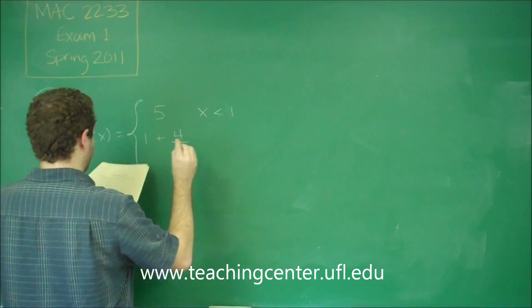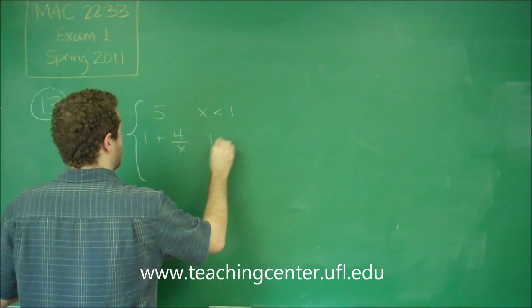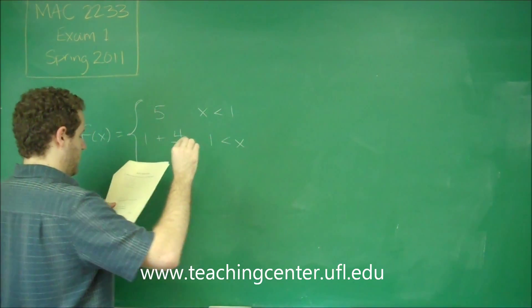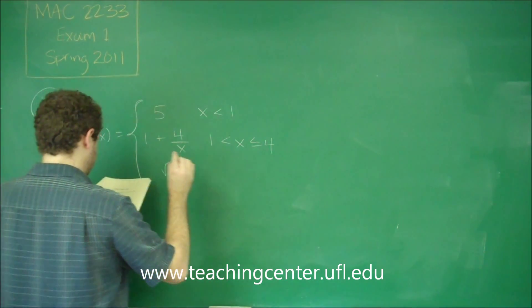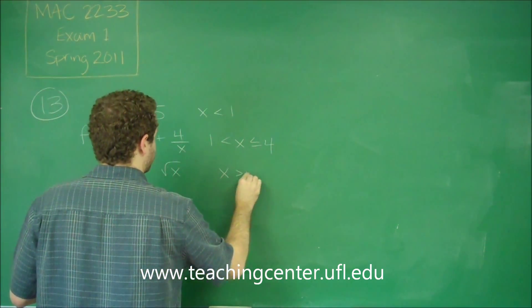We have the function 5 if x is less than 1, 1 plus 4 over x if x is greater than 1 and less than or equal to 4, and just the square root of x if x is greater than 4.